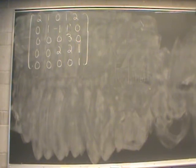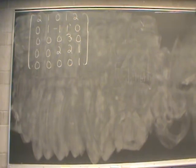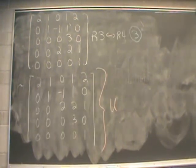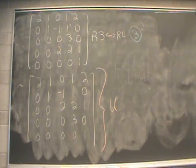Now we want to move on to column 3. The easiest way to get this matrix into upper triangular form is to switch row 3 and row 4 — that's going to be our next elementary row operation. Our last elementary row operation is row 3 switched with row 4, and that simplifies our original matrix to an upper triangular matrix. I'm going to label this upper triangular matrix with a capital U.